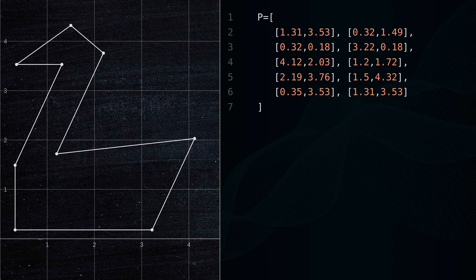The following code shows how to implement the ray casting algorithm in Python. Initialize the number of intersections to zero. Declare the x and y coordinates of the point.